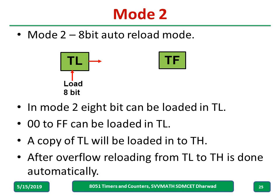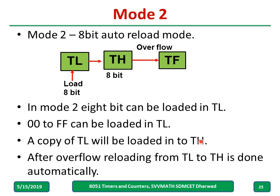In Mode 2, 8-bit auto-reload is used. An 8-bit value is loaded into TL, and a copy is automatically sent to TH by the microcontroller — no instruction needed. Any number from 00 to FF can be loaded. If you load a larger number, the delay will be shorter; if you load a smaller number, it takes more time to reach FF. After overflow, the value from TH is automatically reloaded back into TL — this is called auto-reload.